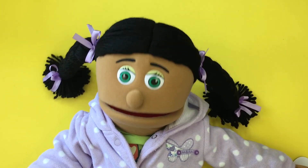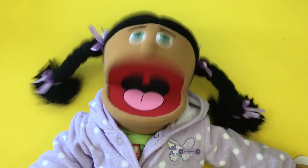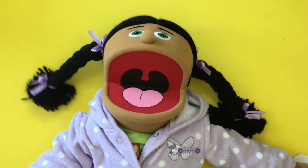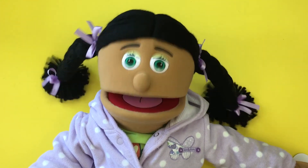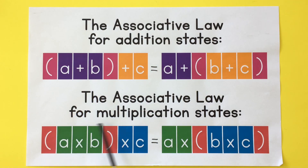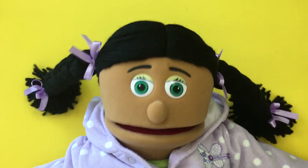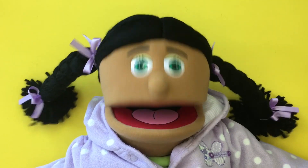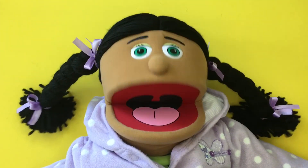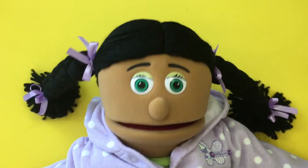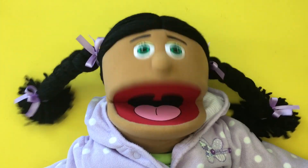The associative law for addition states: (A plus B) plus C equals A plus (B plus C). The associative law for multiplication states: (A times B) times C equals A times (B times C).